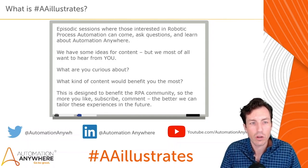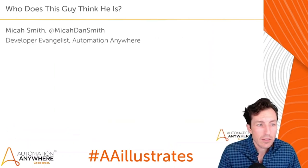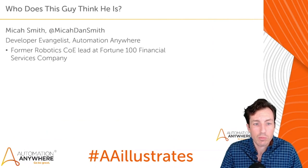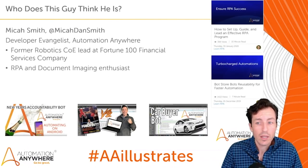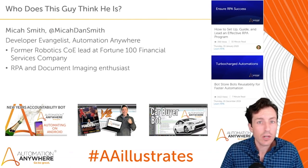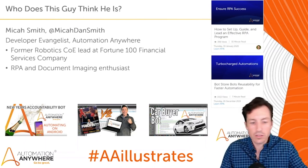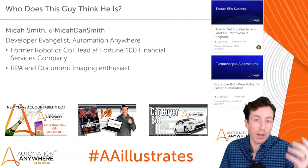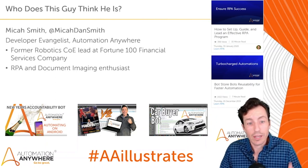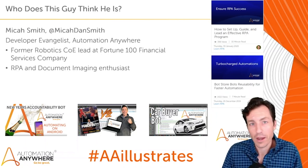My name is Micah Smith. I'm a developer evangelist here at Automation Anywhere. I'm a former COE lead for a robotics program at a Fortune 100 financial services company. I'm an RPA and document imaging enthusiast — I've created lots of fun bots, from automating on Android to fighting in Mike Tyson's Punch-Out to buying cars. I write articles and create videos, and I'm really passionate about getting people as excited about RPA as I am.